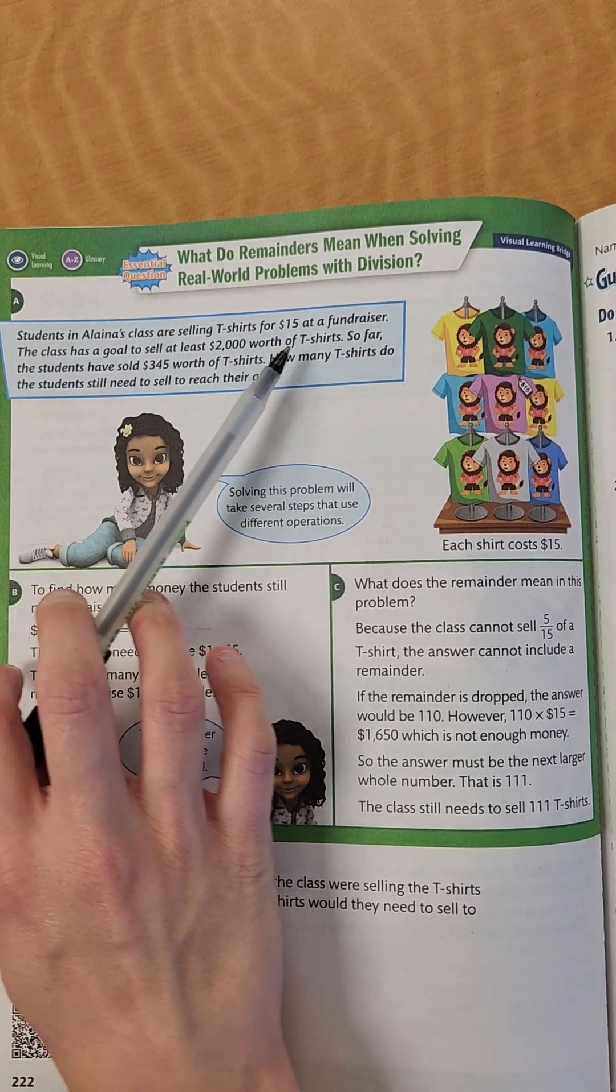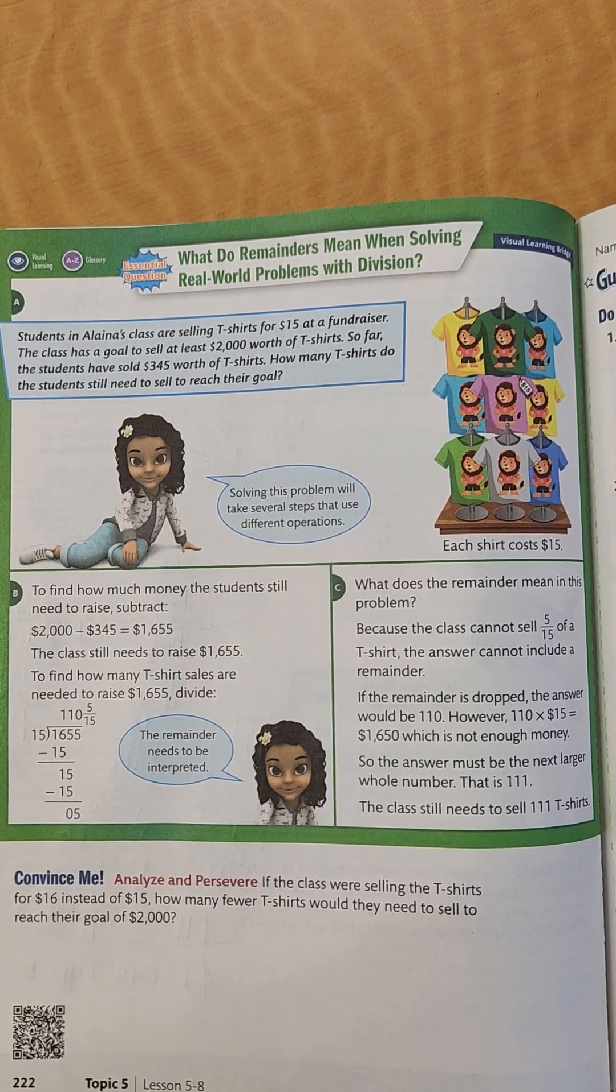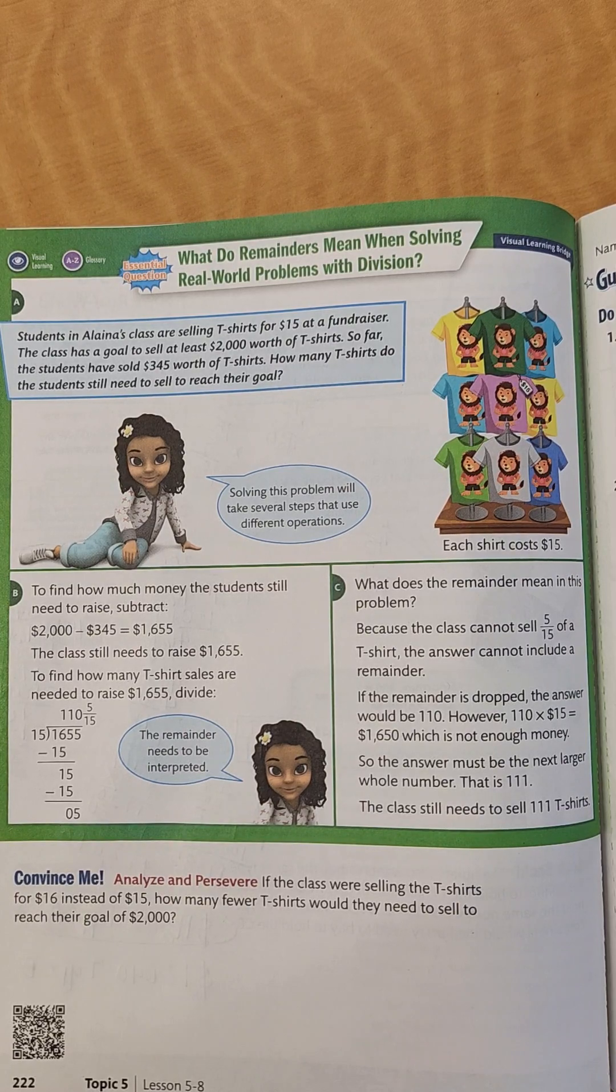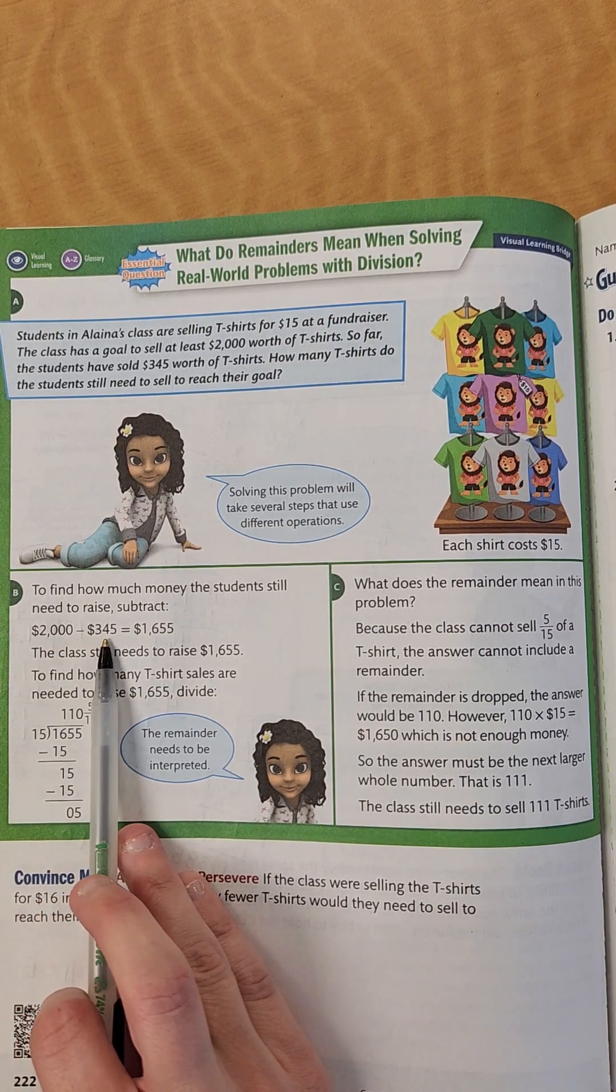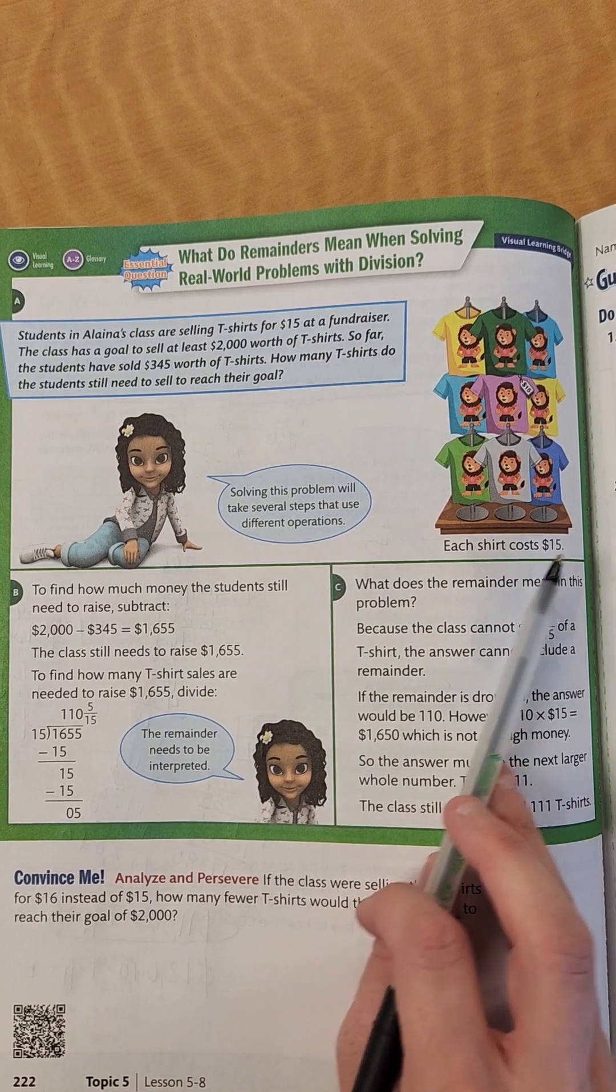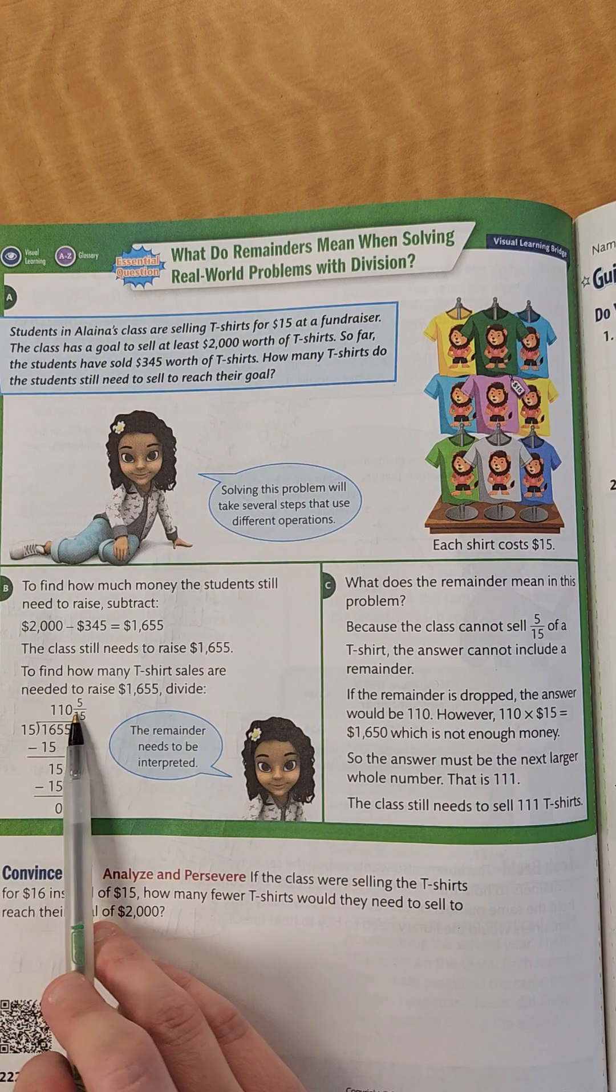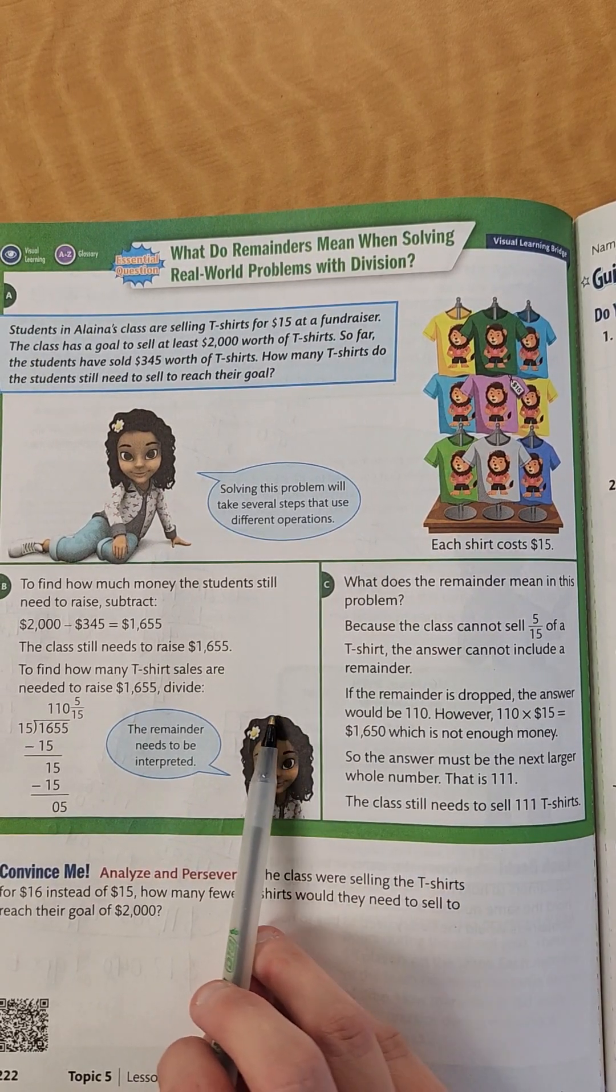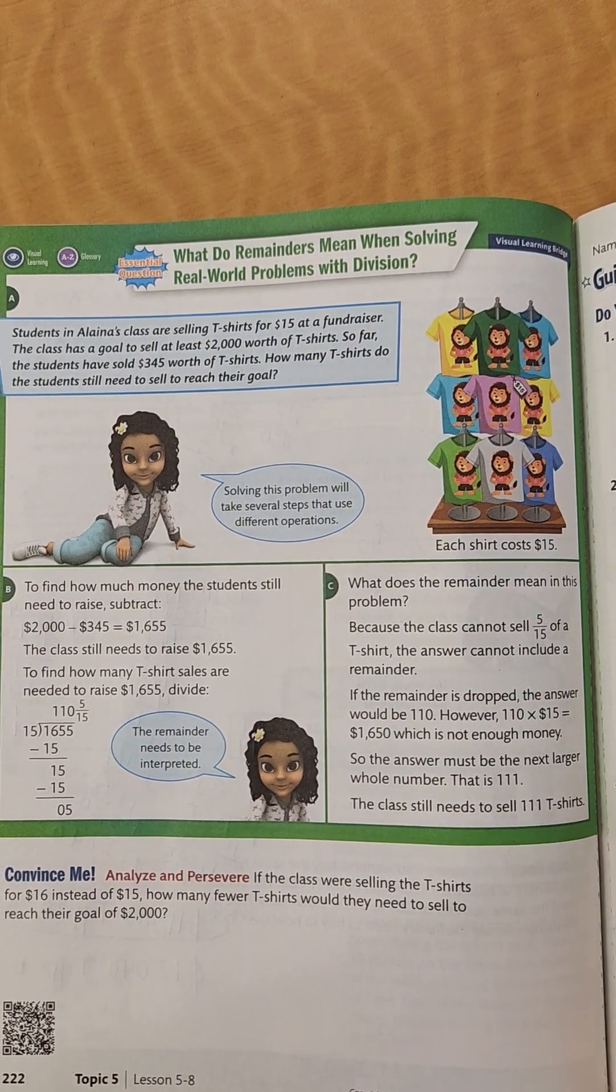Students in Elena's class are selling t-shirts for $15 at a fundraiser. The class has a goal to sell at least $2,000 worth of t-shirts. So far the students have sold $345 worth. How many t-shirts do they still need to sell to reach their goal? You would have your $2,000 minus $345, which gives you $1,655. Then divide by the cost of each shirt, which was $15. That would be 110 with a remainder of $5. But because they can't sell part of a t-shirt, you would have to sell an additional shirt. So you would have to do 111 t-shirts to make that money.